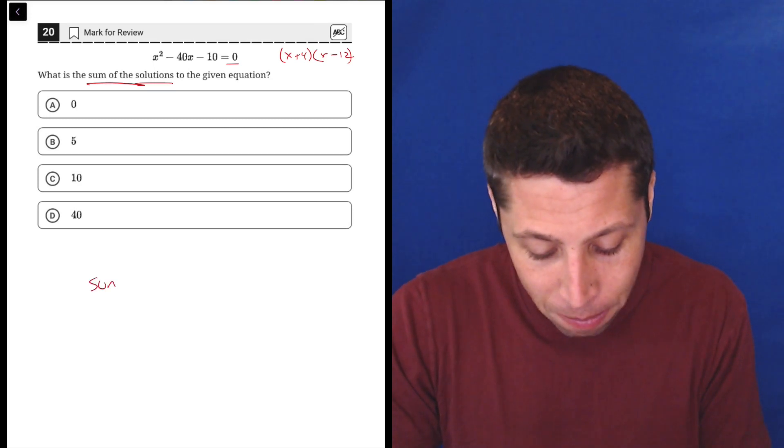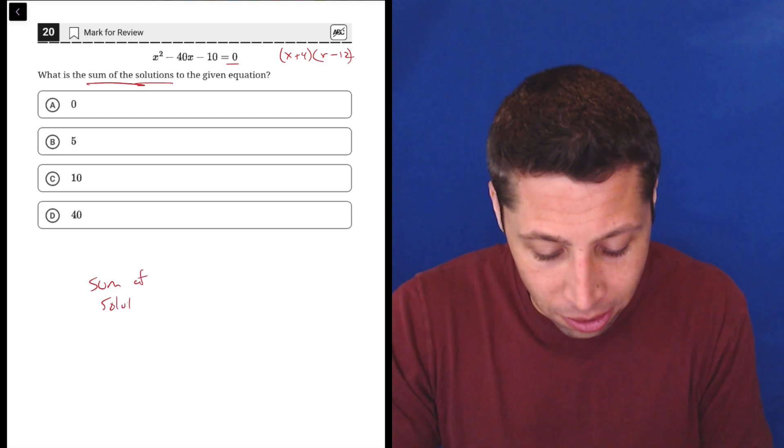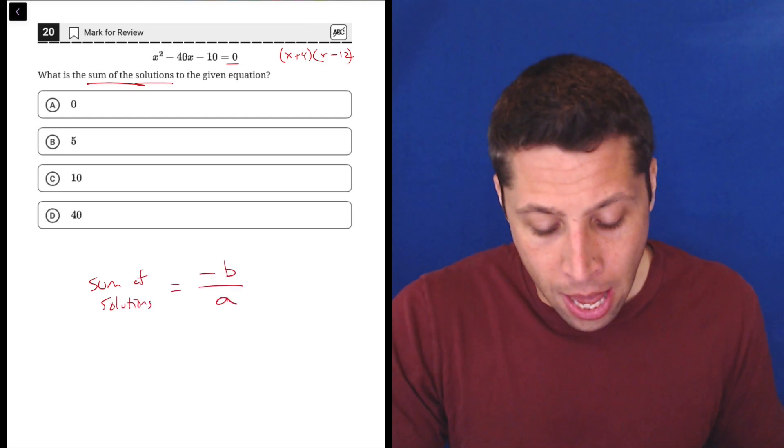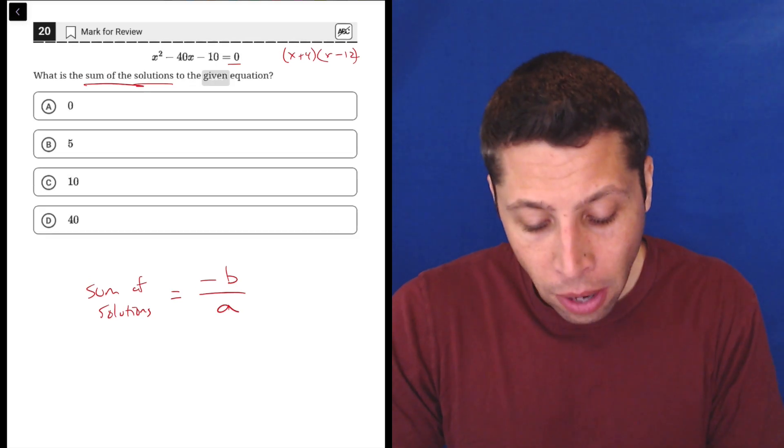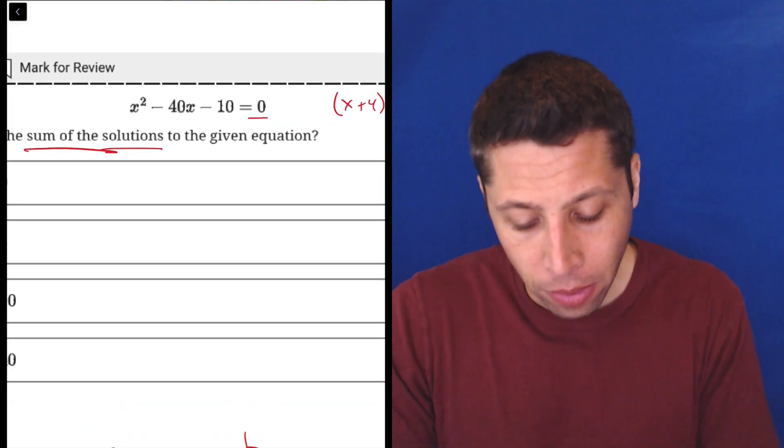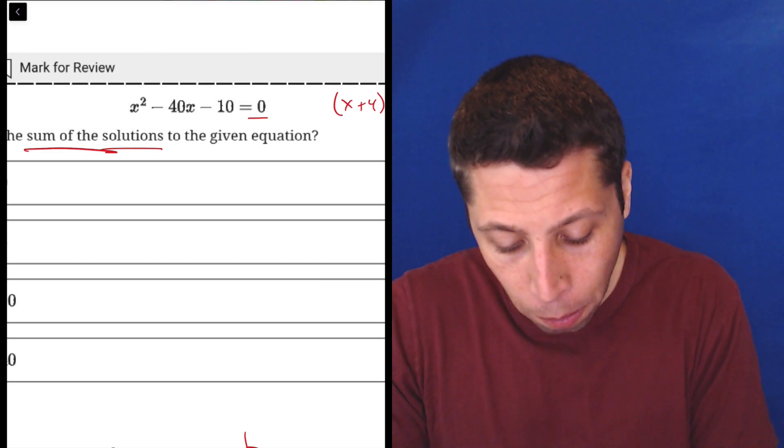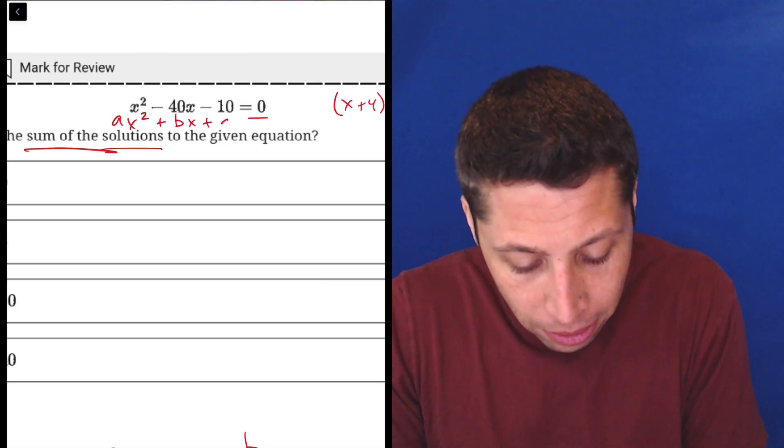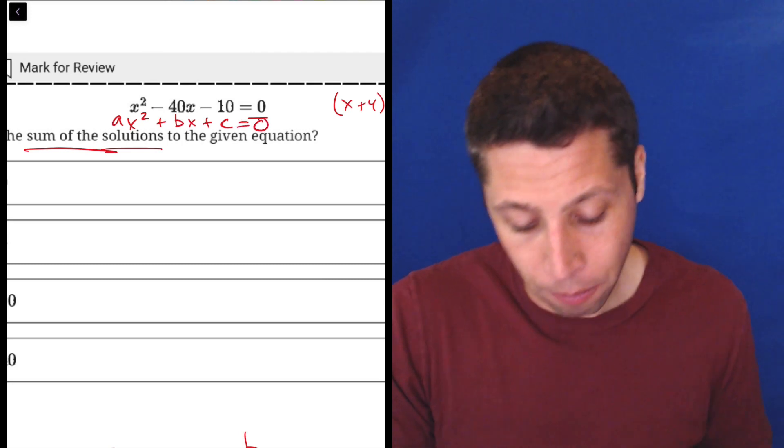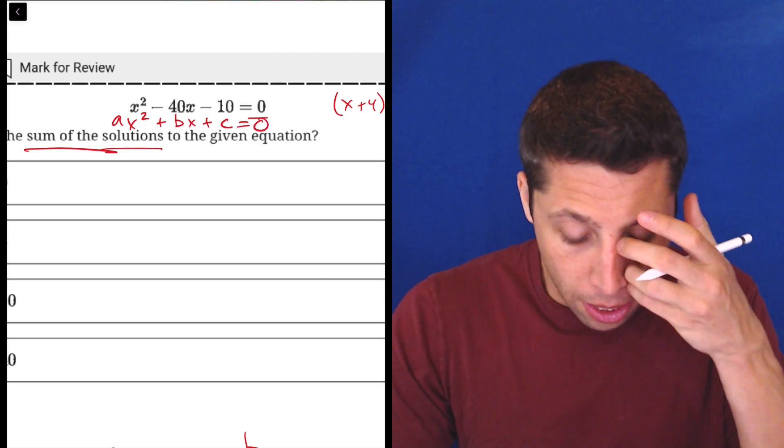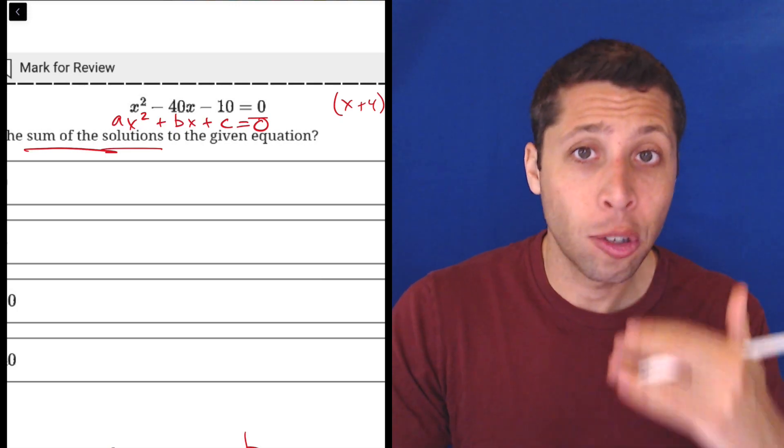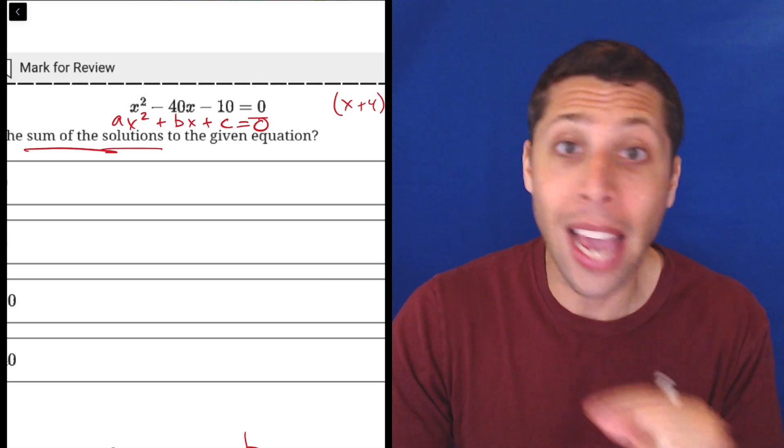It is the sum of the solutions is equal to negative b over a. So, where are b and a coming from? Well, whenever we have a quadratic in this format, it basically takes the form ax squared plus bx plus c is equal to zero, or equal to y. And so, when we talk about a, b, and c, we're talking about the numbers that are in front of these very specific parts of the x's.